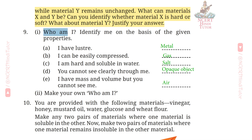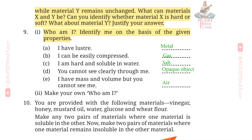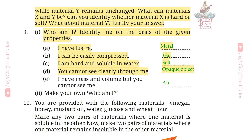Q9 Part 1 — Who am I? Identify me on the basis of the given properties. A. I have lustre — Answer: Metal. B. I can be easily compressed — Answer: Gas. C. I am hard and soluble in water — Answer: Salt. D. You cannot see clearly through me — Answer: Opaque object. E. I have mass and volume but you cannot see me — Answer: Air.